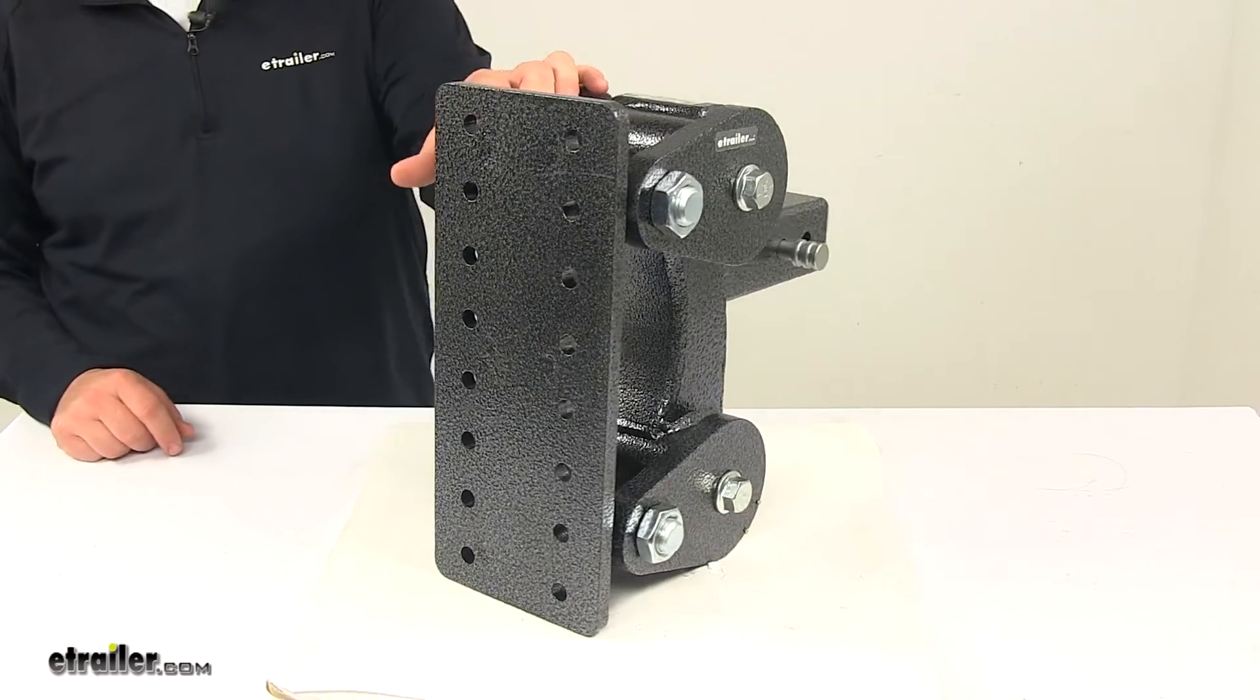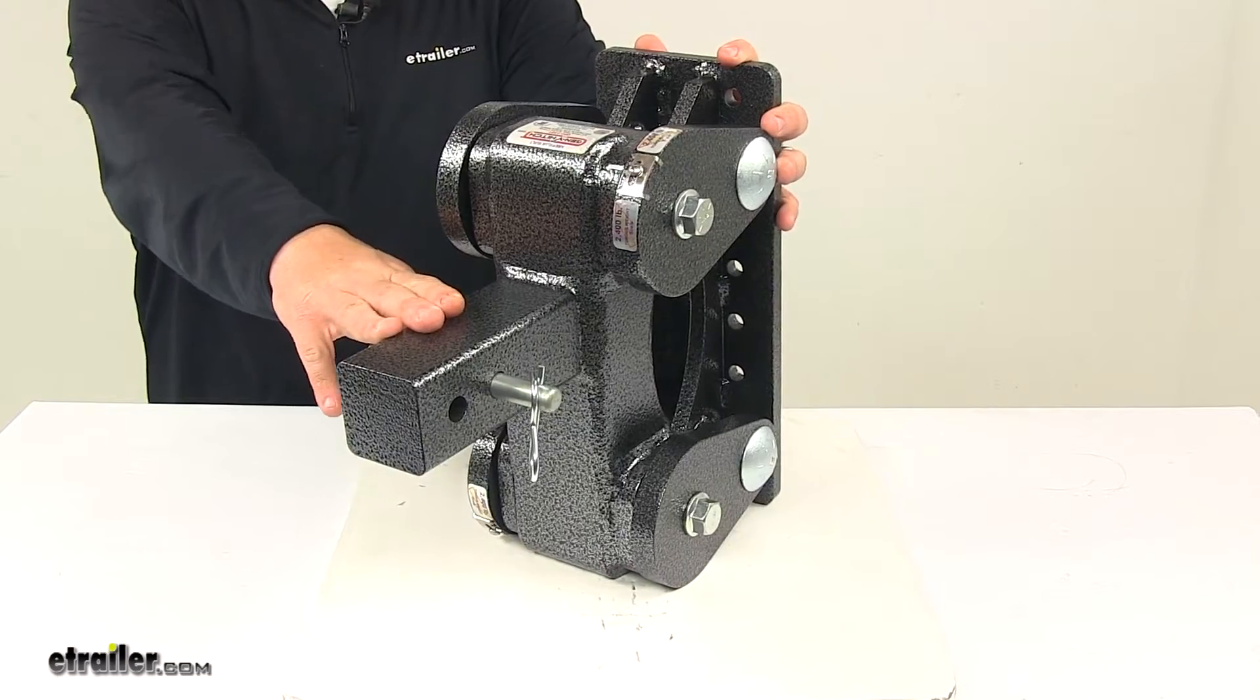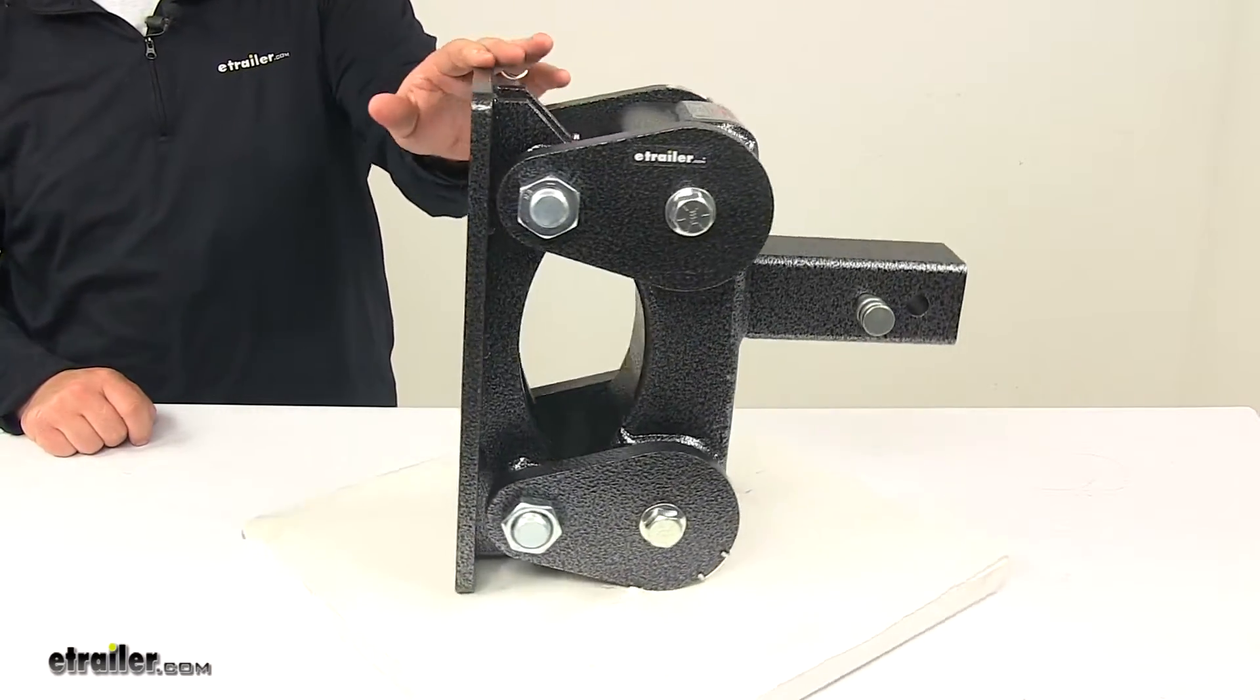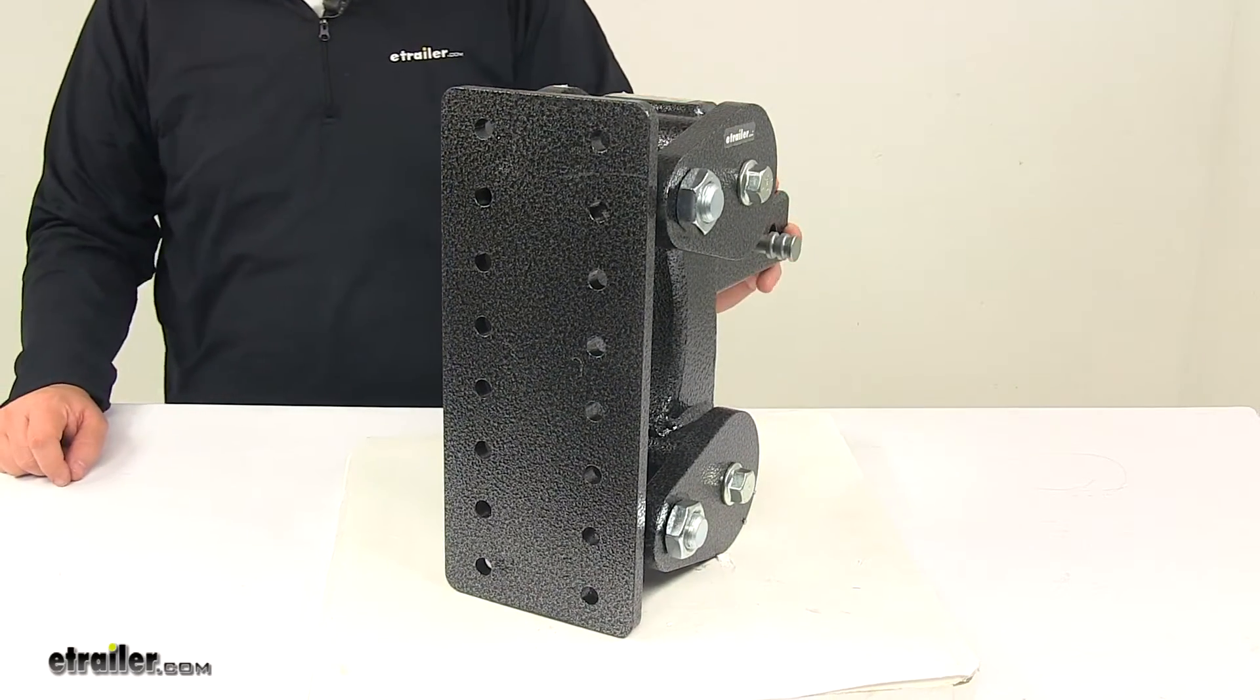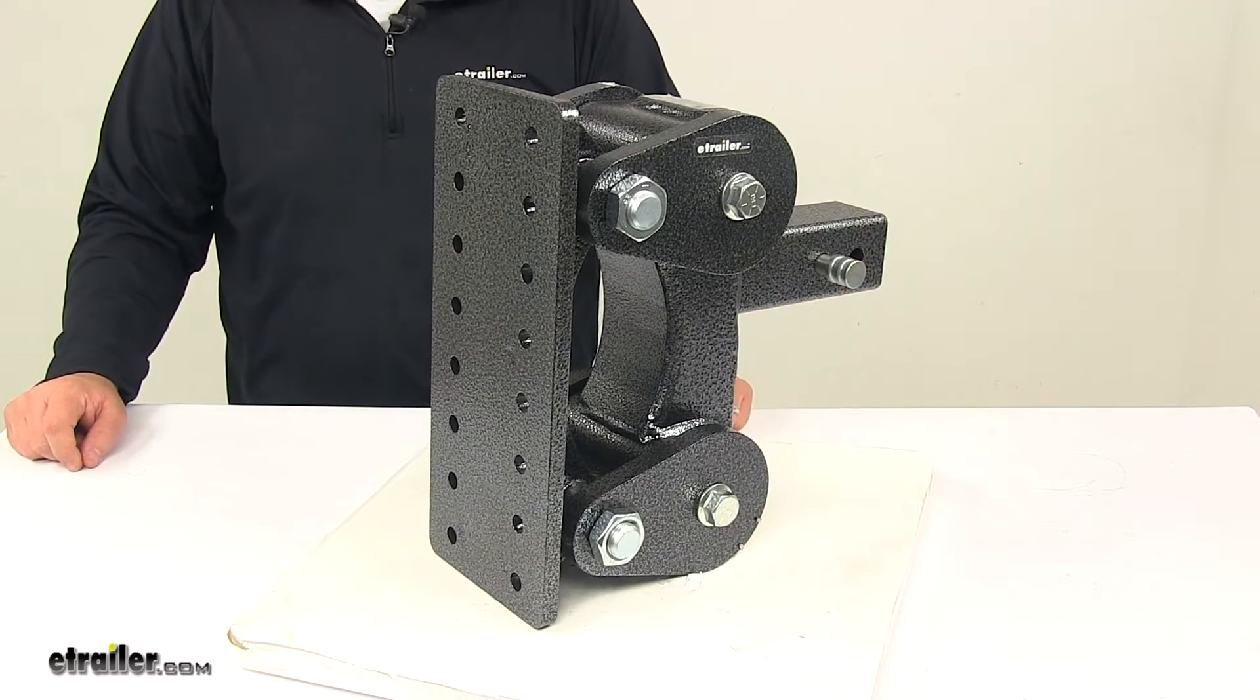This is designed to fit inside of a 2½ inch by 2½ inch trailer hitch receiver. Features a 21,000 pound towing capacity and a 2,400 pound tongue weight capacity. It can be used in the drop or rise positions and provides up to a 6½ inch rise or drop.